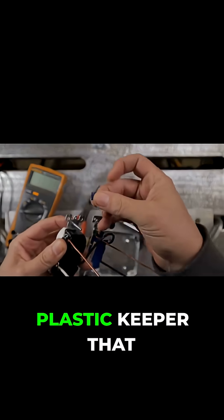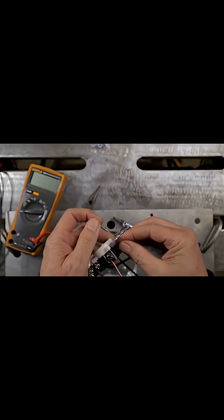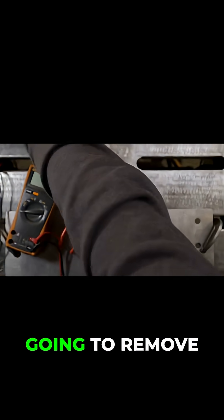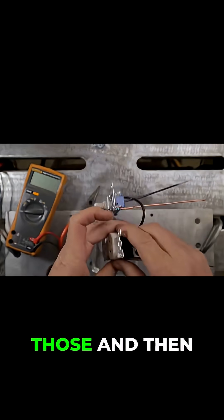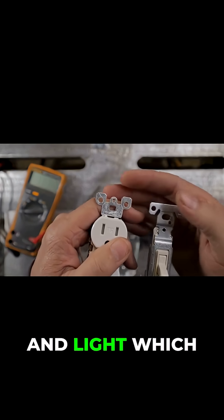They have a plastic keeper that keeps that screw from falling out, so I'm just going to remove all four of those. And then if you see on these outlets and light switches...